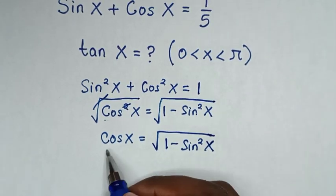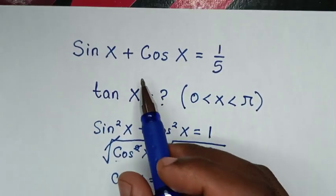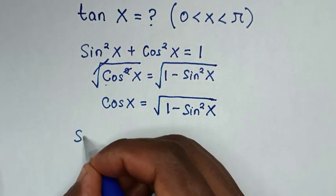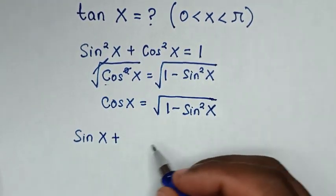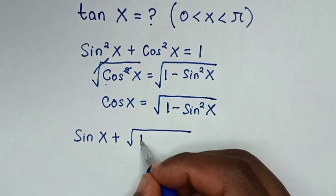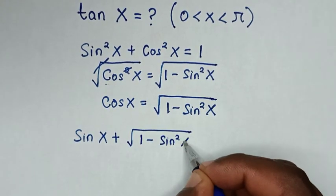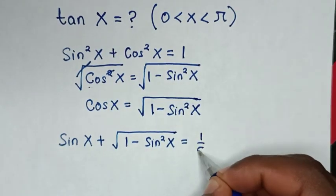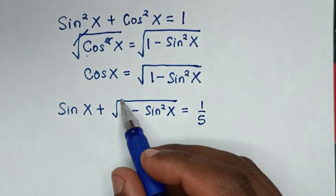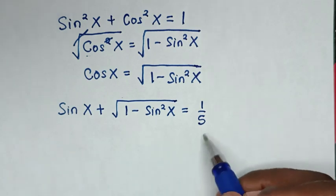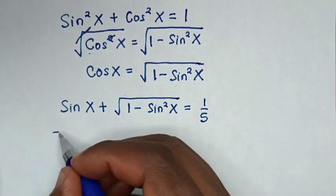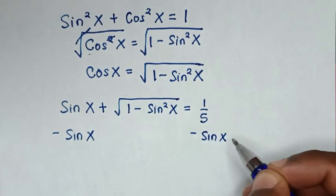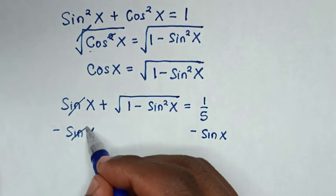We substitute this expression for cos x into the original equation. So sin x plus the square root of 1 minus sin squared x equals 1 over 5. To remove the square root, we move sin x to the right side by subtracting sin x from both sides. The result is: square root of 1 minus sin squared x equals 1 over 5 minus sin x.